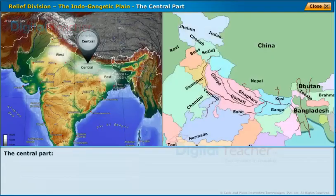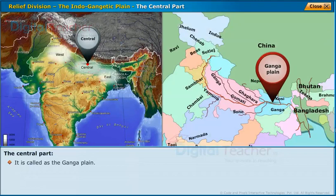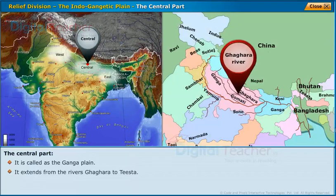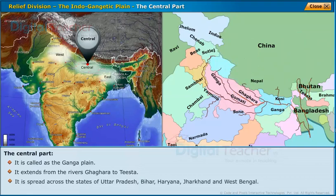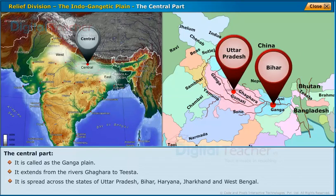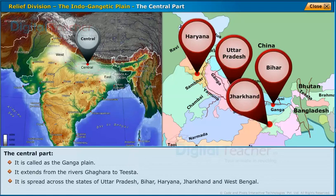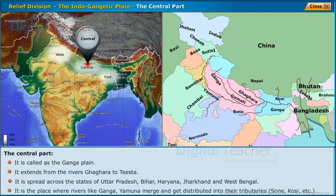The central part is called the Ganga Plain. It extends from the river Ghaghra to the Tista. It is spread across the states of Uttar Pradesh, Bihar, Haryana, Jharkhand, and West Bengal. It is the place where rivers like Ganga and Yamuna merge and get distributed into their tributaries such as Sone and Koshi.